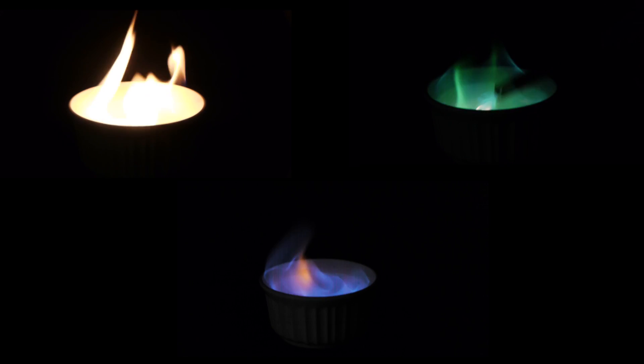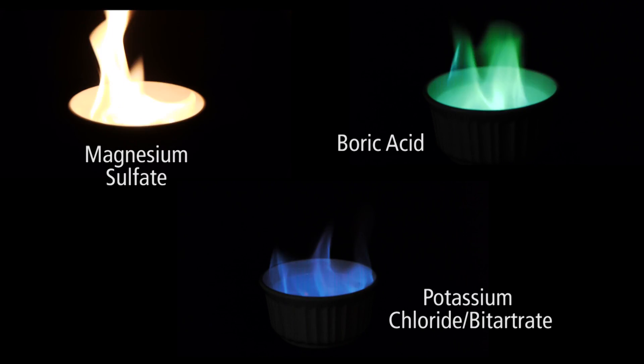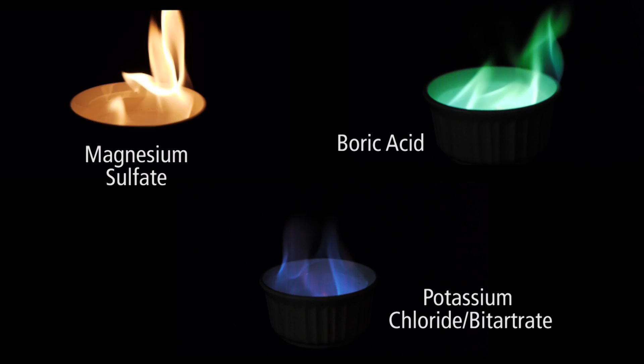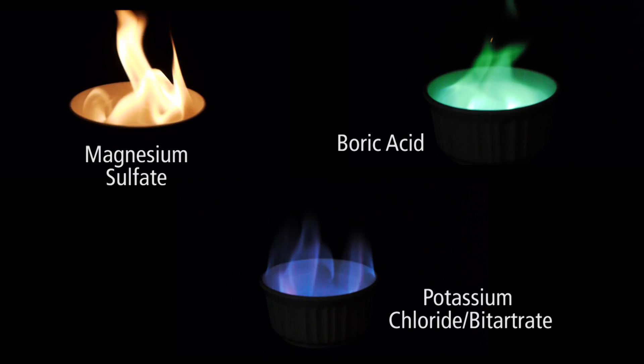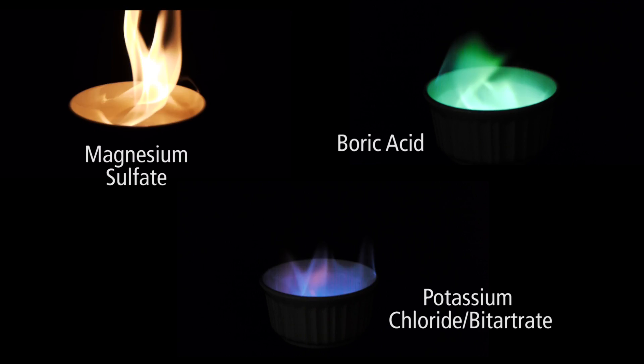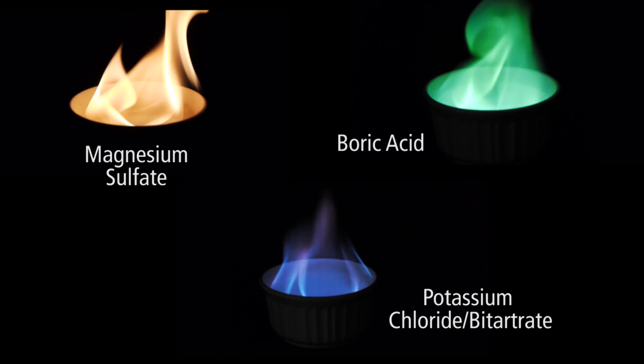Alright, let's go through it. So, what do we have here? Magnesium sulfate burns nice and bright. Boric acid burns nice and green. And potassium chloride slash bitartrate burns nice blue and violet-y. See you next week.